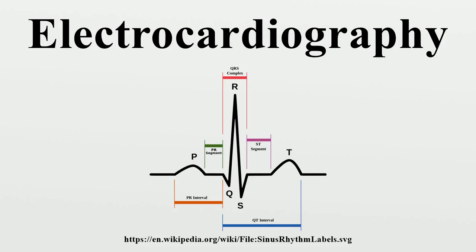A heart rate between 60 and 100 beats per minute is considered normal. A heart rate slower than 60 beats per minute is said to be bradycardic, and a rate faster than 100 beats per minute is said to be tachycardic. The physiologic rhythm of the heart is normal sinus rhythm, wherein the sinoatrial node initiates the cardiac cycle, and a P wave precedes every QRS complex.